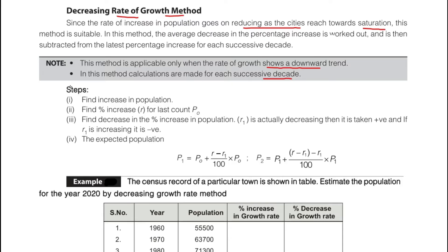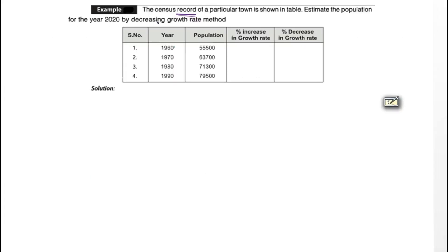The steps for the decreasing rate method are: first, find out the increasing population; then find the percentage increase on the last census count; then find the decreasing percentage increase in population — that is r', which is actually decreasing, so we take it as positive; if r' is increasing, it is taken as negative. Then the expected population is calculated from the formula.